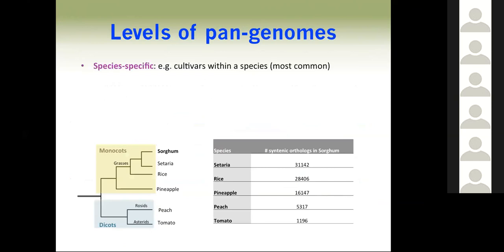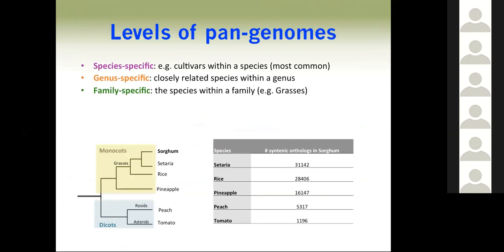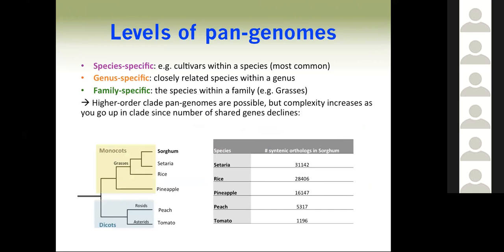Among the levels of pan genomes, there are species-specific pan genomes of cultivars within a species — the most common type. There are also genus-specific pan genomes of closely related species, and family-specific pan genomes, like the grass circle image from the first slide. Higher-order clade pan genomes are possible, but complexity increases as you go up in clades since the number of shared genes declines.